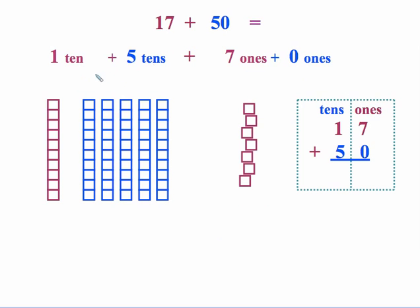So again, we have it written out here. We have our physical model. And then we also have this vertically, the way that students are going to see it. But we've added, again, the columns to emphasize, again, adding like items.